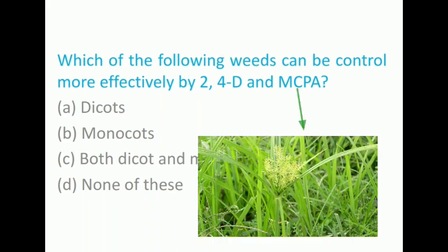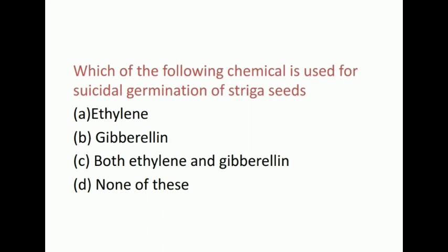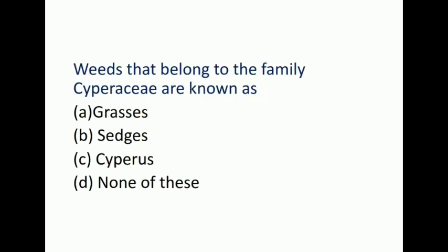Coming to the next question: Which of the following chemical is used for suicidal germination of Striga seeds? The options are ethylene, gibberellin, both ethylene and gibberellin, none of these. The correct answer is ethylene. Talking about Striga, it is an annual parasitic herb with a wide range of host crop plants. In India, it is most problematic in pearl millet and sorghum. Striga produces millions of dust-like seeds with high degree of viability.